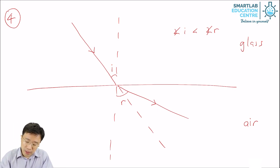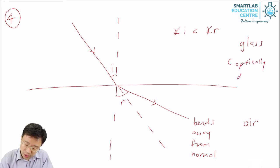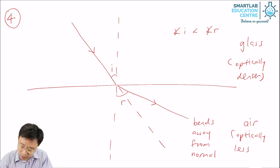So in this case, light bends away from the normal. Why does it bend away from the normal? Because glass is optically denser and air is optically less dense.